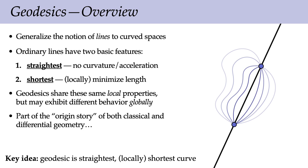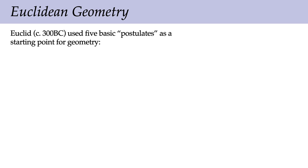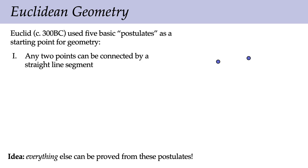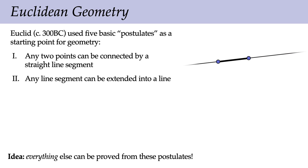Geodesics are interesting because they're part of the origin story of both classical and differential geometry. We go back to Euclid, one of the first people to understand geometry rigorously. He wrote down five basic postulates — things he believed geometry should satisfy that seemed self-evident — then tried to prove everything else from only those postulates. The first postulate said two points can be connected by a straight line segment.